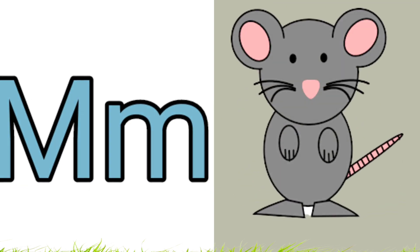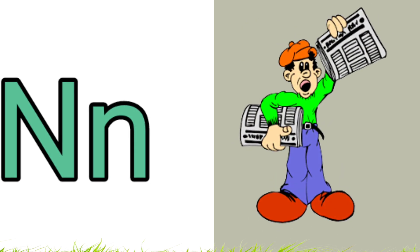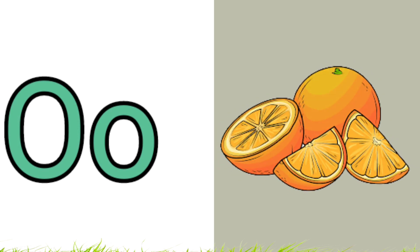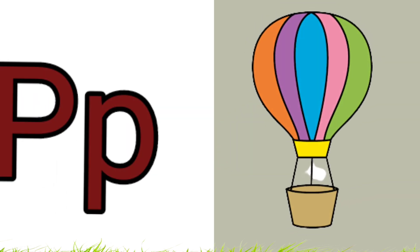M is for Mouse, N is for Newspaper, O is for Orange, P is for Parachute.